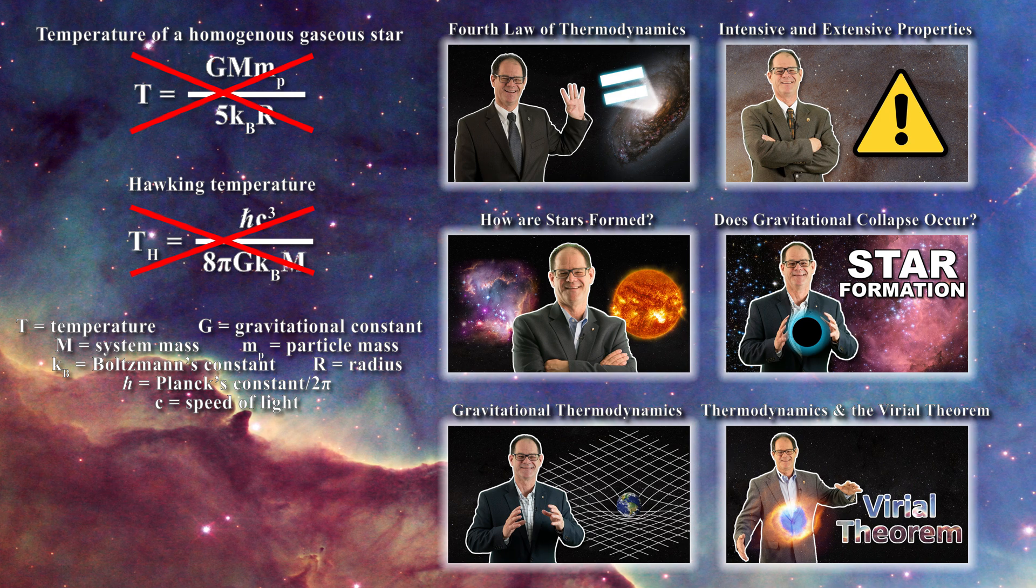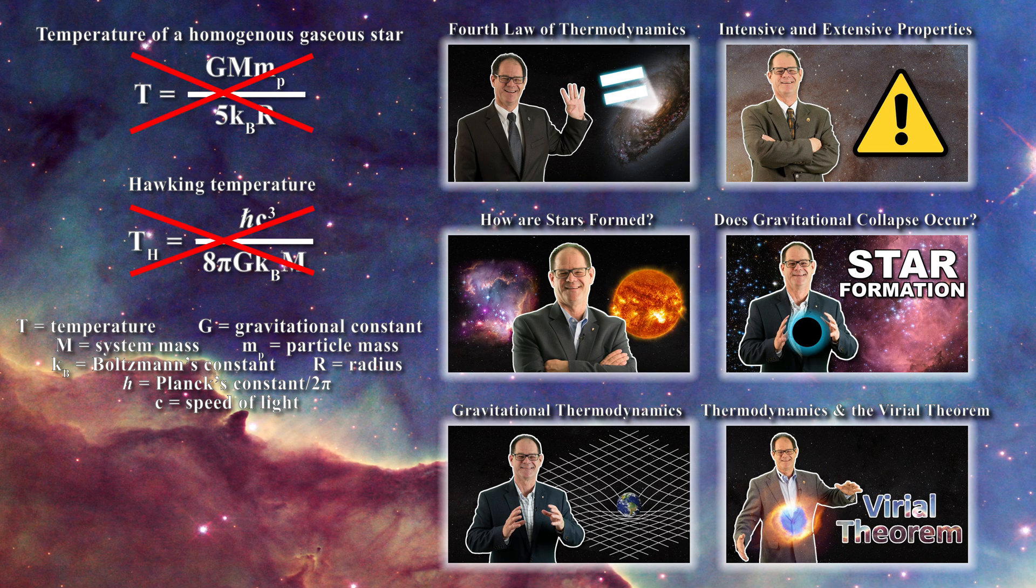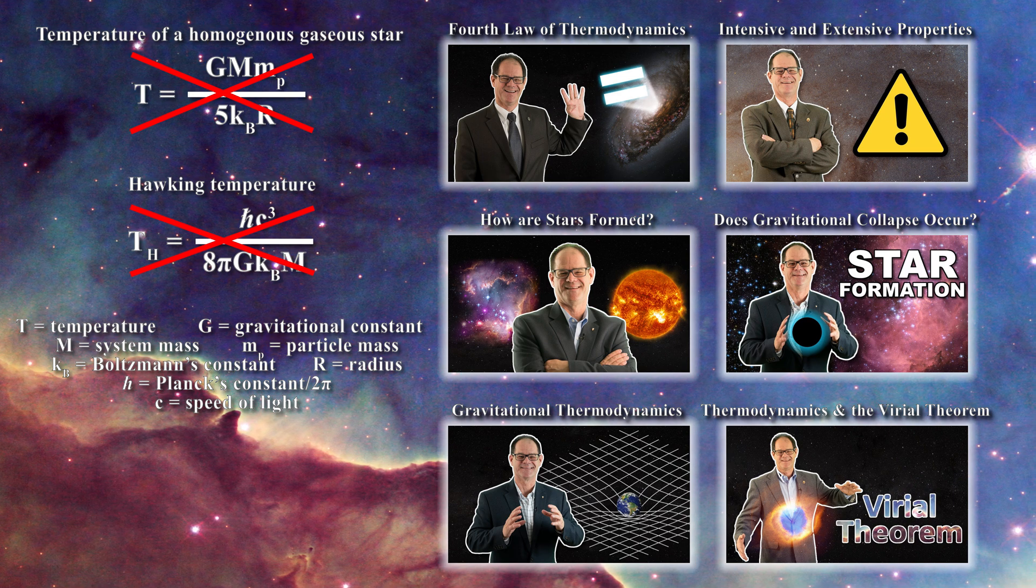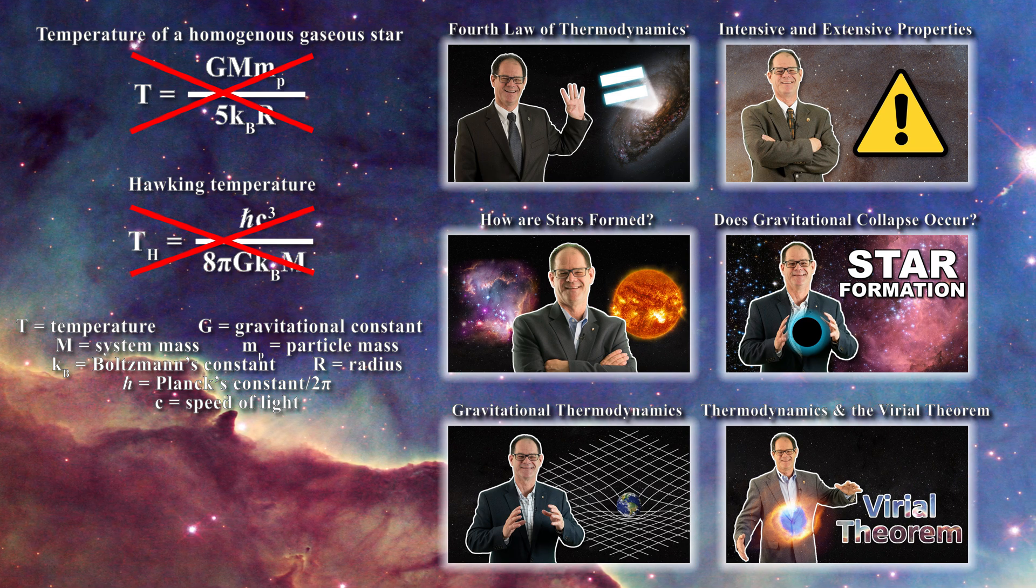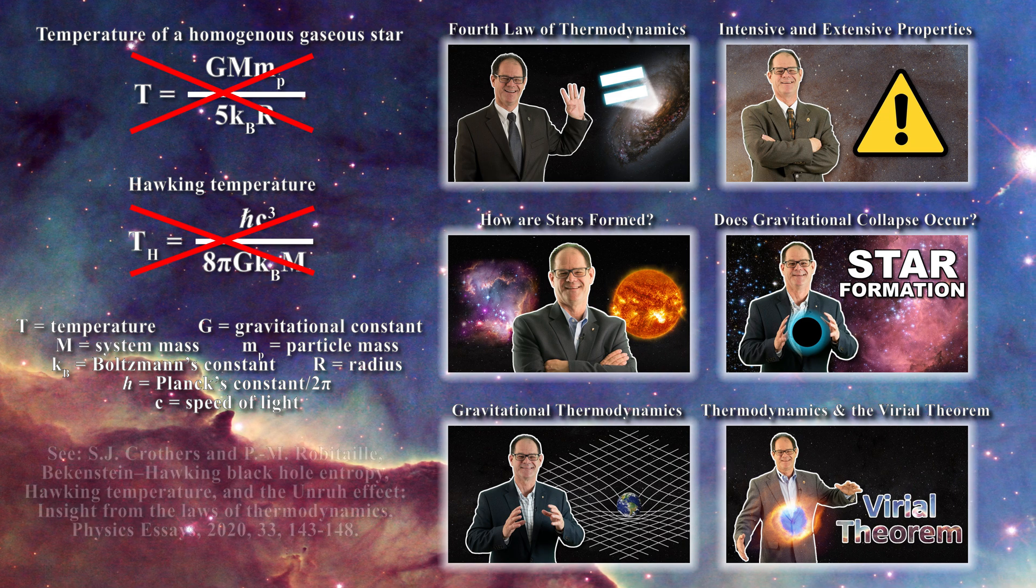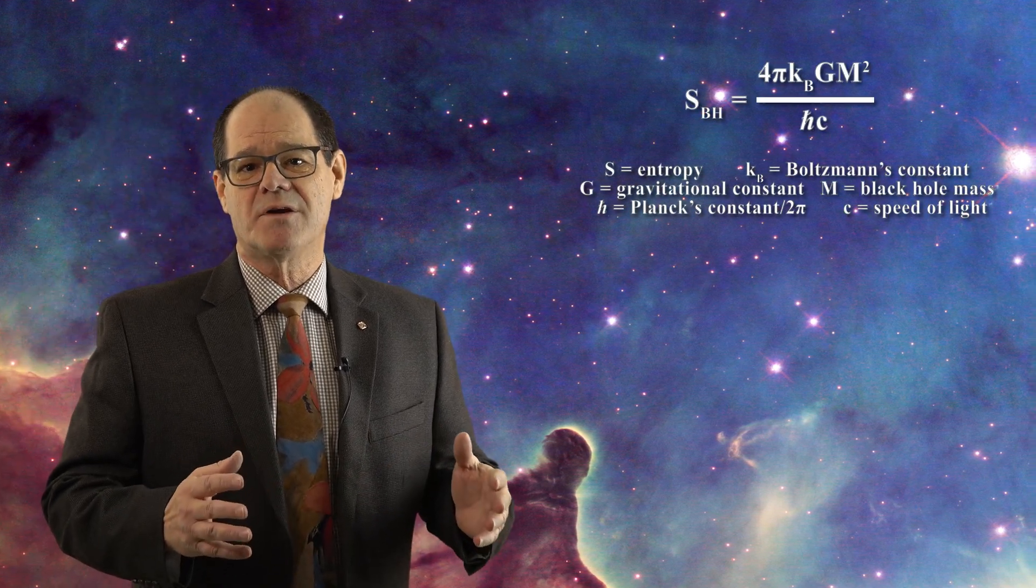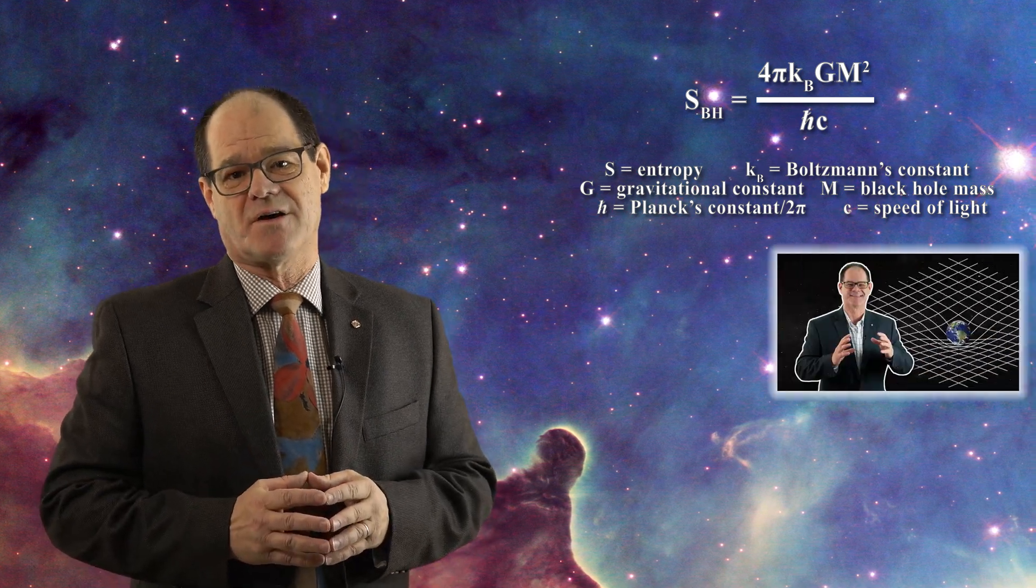This not only includes the equation advanced by Jeans, Eddington and Chandrasekhar relative to the treatment of a gaseous star, but also the equation for the temperature of a black hole and the Unruh temperature. In thermodynamics entropy must always be extensive, but the Hawking entropy equation for a black hole is not extensive.